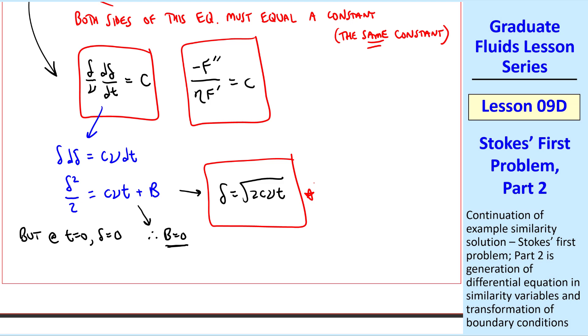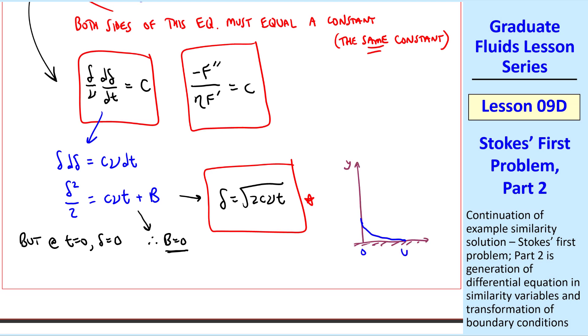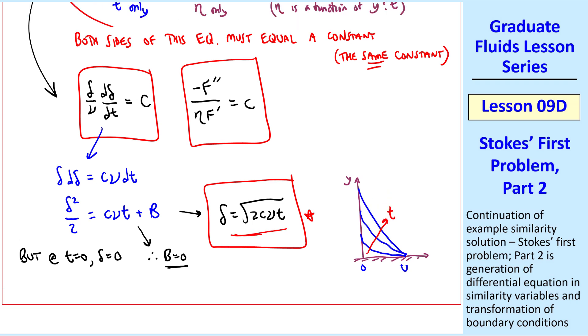Thus, delta is the square root of 2cνt. This is very significant. We haven't even solved the equation yet. But we know that the velocity profiles, as they grow with time, grow like the square root of time and the square root of kinematic viscosity ν.